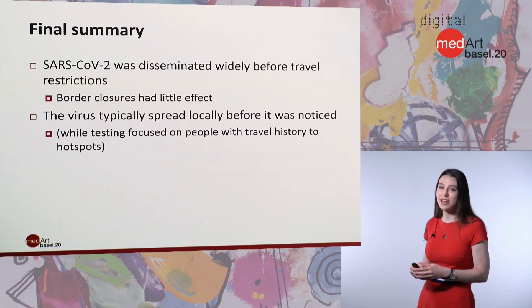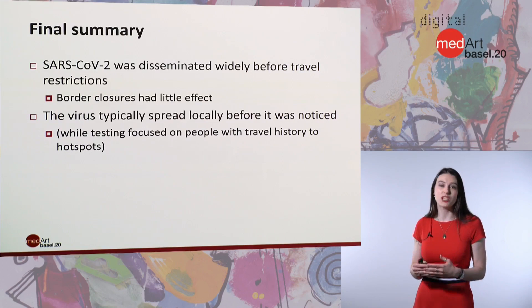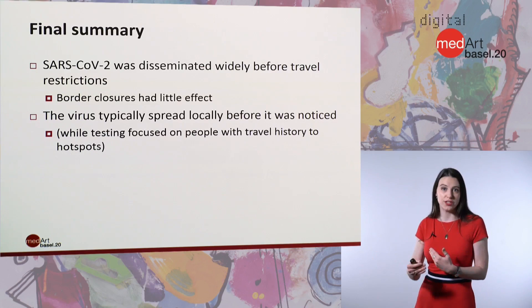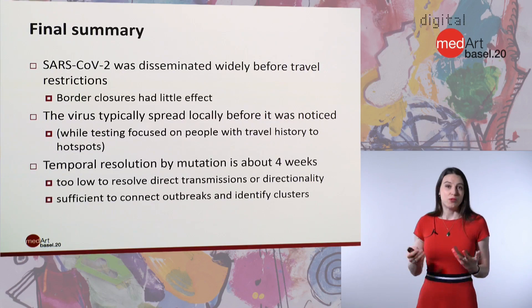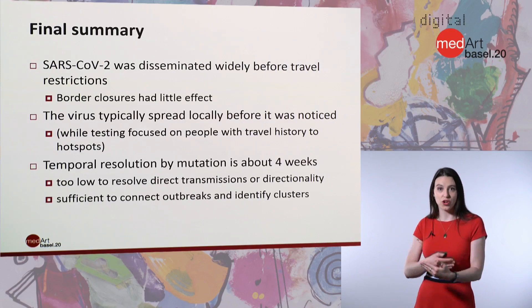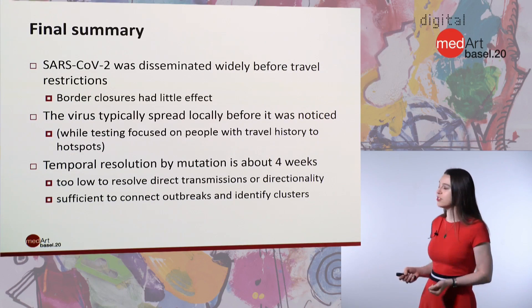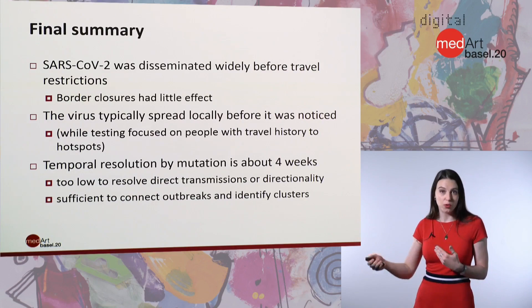The virus was typically spreading locally before we knew it was there, because we were focusing testing on people with a travel history to a risk country. We can see through the genetics that the virus was probably transmitted multiple times between different countries before we even knew it was circulating. The temporal resolution by mutation is only about four weeks, so we do have some uncertainty about when things happened. However, it is sufficient to connect different outbreaks and identify clusters and local versus imported cases.